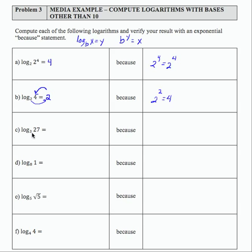What is the exponent on 3 that gives me 27? Well, 3 to the third power is 27. So log base 3 of 27 equals 3 because the base of 3 raised to the third power equals 27.